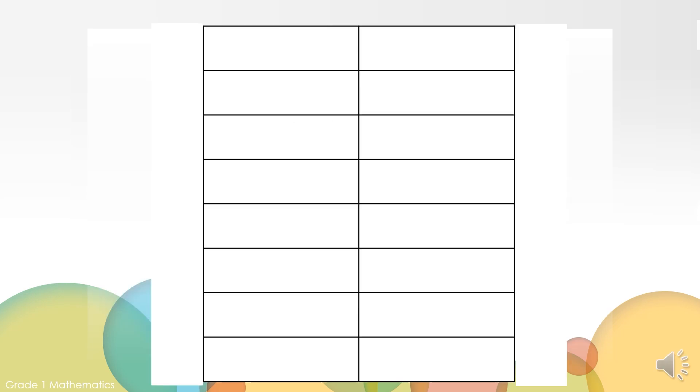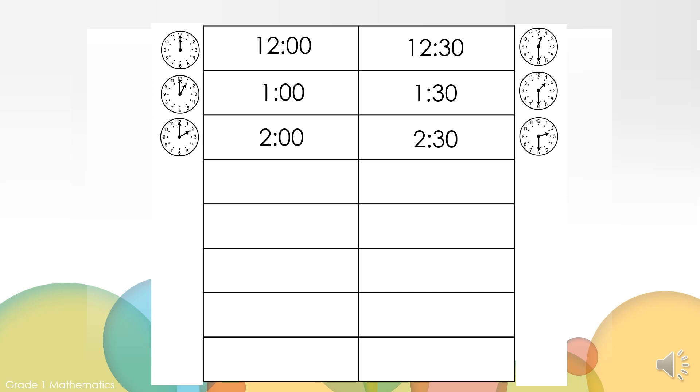Let's continue to practice by counting by the half hour. The time will appear on the screen as we go to help keep track. Let's start by counting starting at 12 o'clock. 12 o'clock, 12:30, 1 o'clock, 1:30, 2 o'clock, 2:30. Let's pause for a second. What time do you think will come next if we continue to count by half hours?